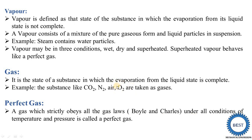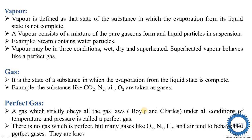Suppose we consider O2 — meaning oxygen. We change the temperature of the oxygen from minus 10 degrees to 100 degrees or 1000 degrees, but they follow all the laws — meaning Boyle's law as well as Charles's law. And suppose we change the pressure of this oxygen from vacuum to higher pressures, but they follow Boyle's and Charles's law — then it is called perfect gas. In actual, there is no gas which is perfect. But many gases like O2, N2, H2, and air tend to behave like a perfect gas. These gases are known as real gases.